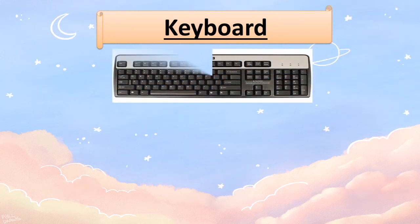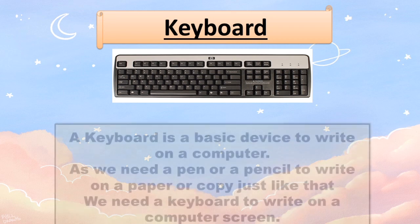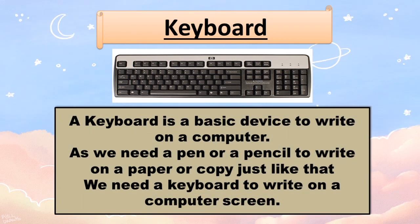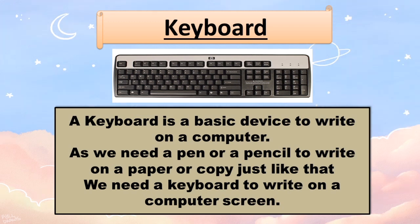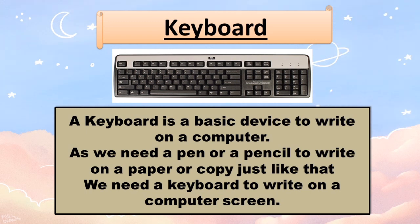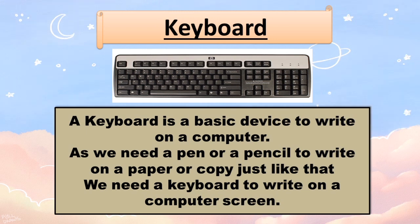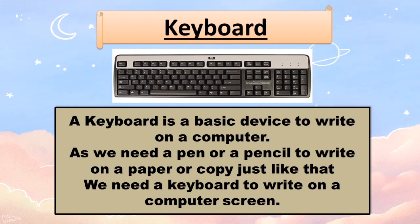Here you have the picture of a keyboard. As you all know, we can find five types of keys on a keyboard: the first one is function keys, the next is alphabet keys, the third is number keys, the fourth is special keys, and the last one is arrow keys. Normally a keyboard is made up of 104 keys. A keyboard is a basic device to write on a computer.